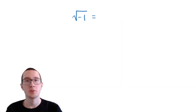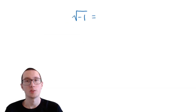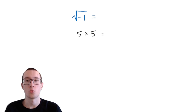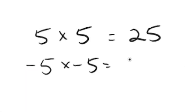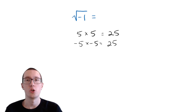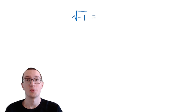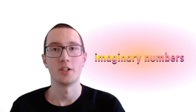You know how all of your teachers have told you that you cannot take the square root of a negative number? Well, it's kind of true. The reason is that whenever you multiply the same number by itself, you're always going to get a positive number. For example, 5 times 5 is 25, and negative 5 times negative 5 — two negatives make a positive — that's still 25. So there's no way to multiply a number by itself and get a negative number. That is until you enter the world of imaginary numbers.